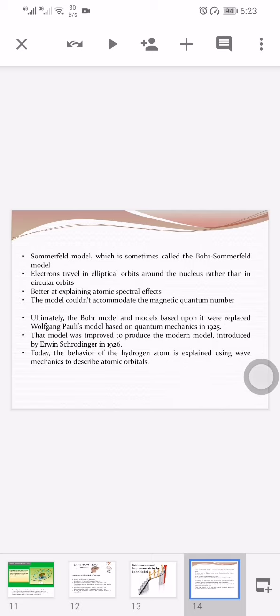In this model, electrons travel in elliptical orbits around the nucleus rather than circular orbits. Thus, Sommerfeld's model was better at explaining atomic spectra effects such as the Stark effect in spectral line splitting. However, the model could not accommodate the magnetic quantum number.